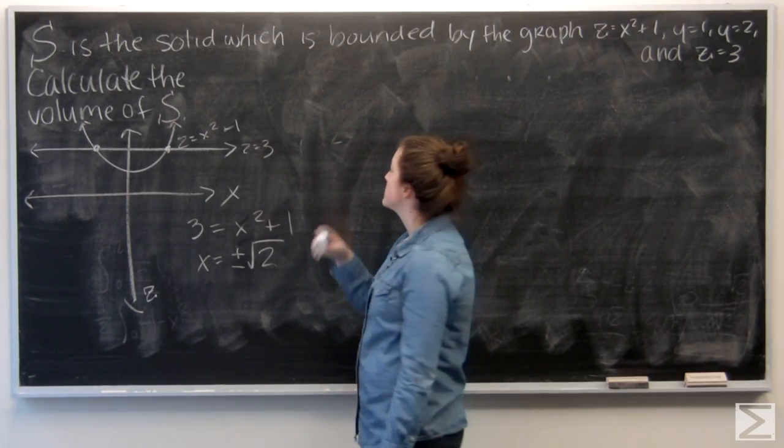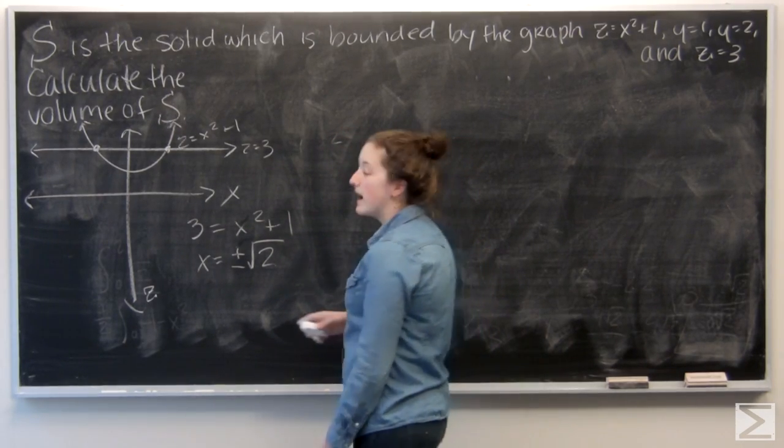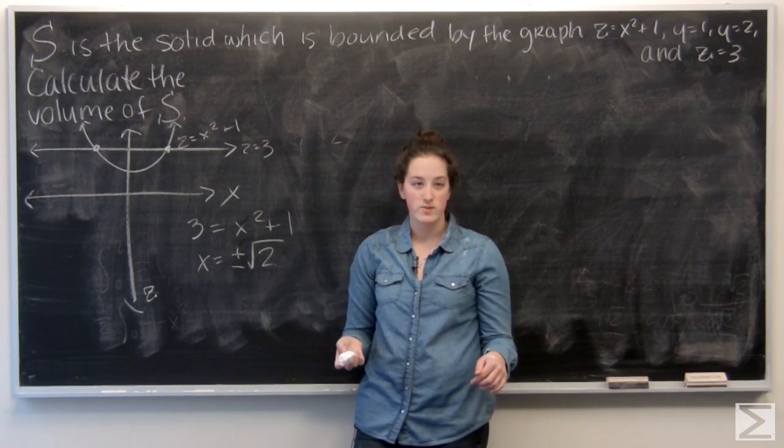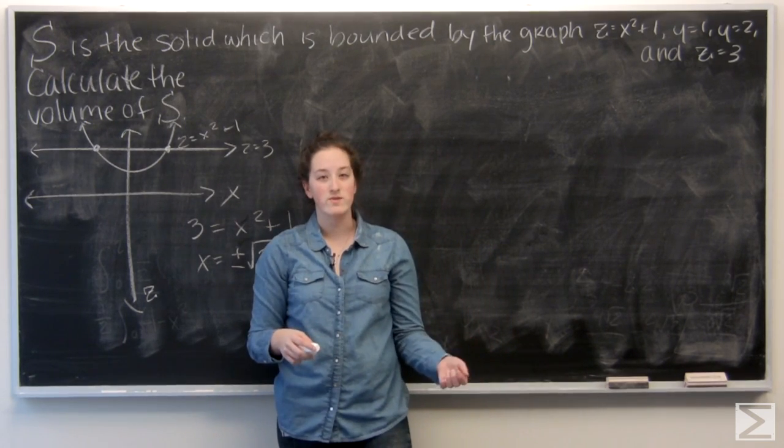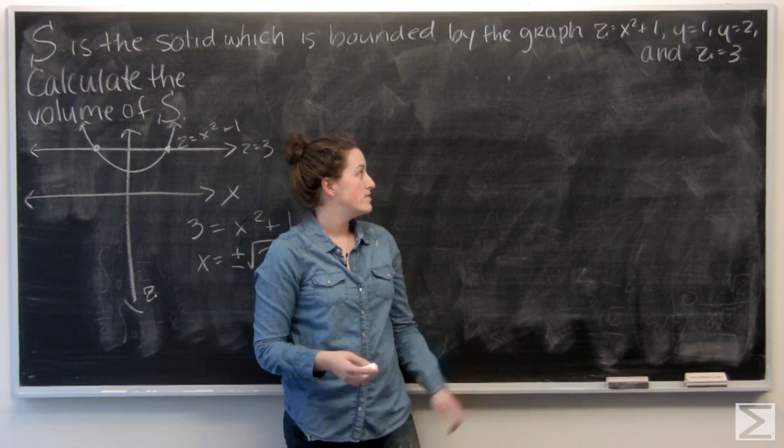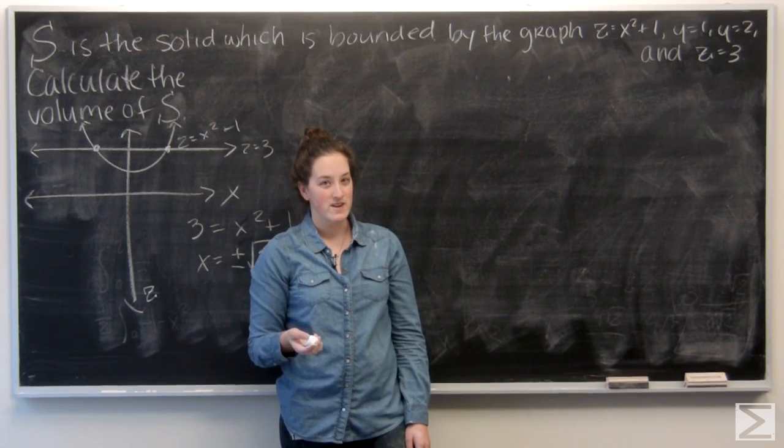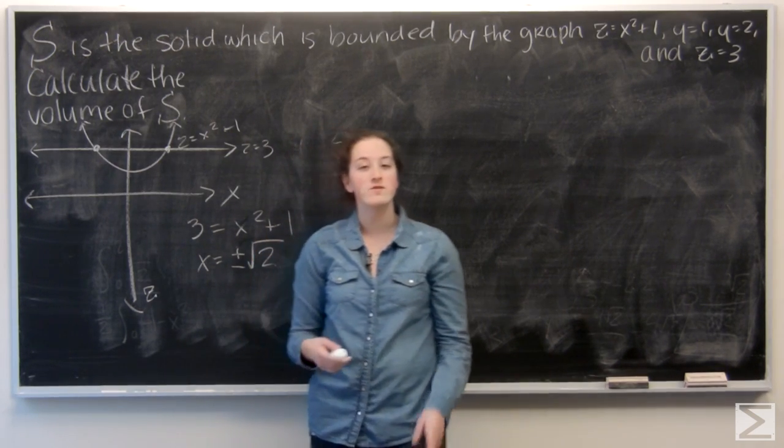I'm given a solid S, and it's defined by being bounded by z equals x squared plus 1, y equals 1, y equals 2, and z equals 3. So you probably noticed I'm missing something here. It only has x bounds, so that's what I did first.